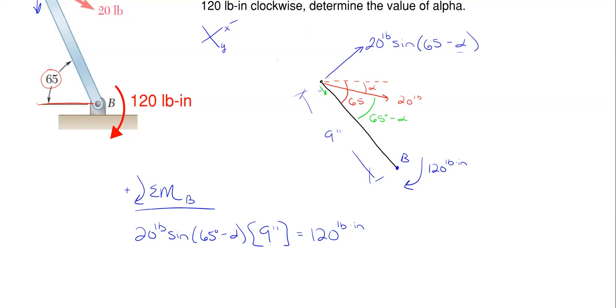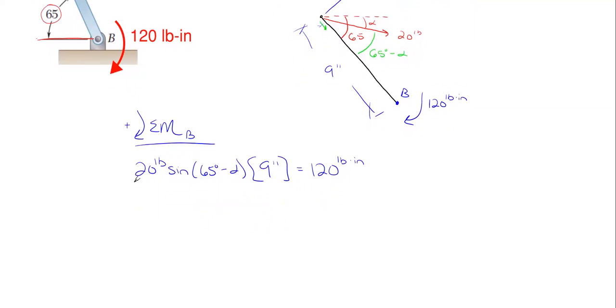So at this point, it just becomes algebra solving for our alpha angle. So nine times 20 gives me 180, and then times sine of 65 minus alpha is equal to 120.